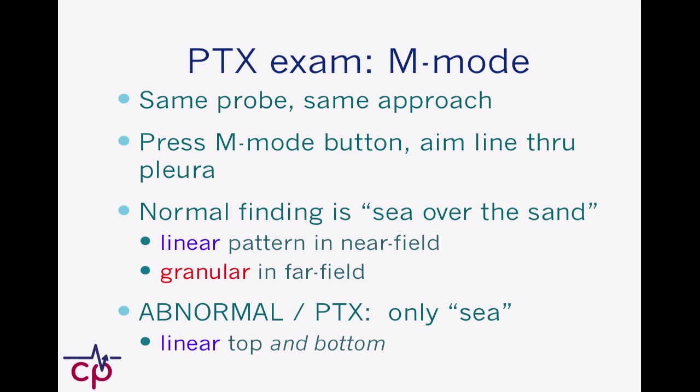M-mode is a way of looking at the ultrasound data as a strip of data that is vertical across the screen, looking at a small stripe of that image over time. We use the same probe, the same approach — trying to put the ultrasound probe in exactly the same location we were in before. We press the M-mode button a couple times, and it gives us a new representation of that data.